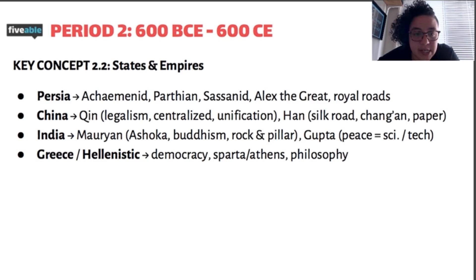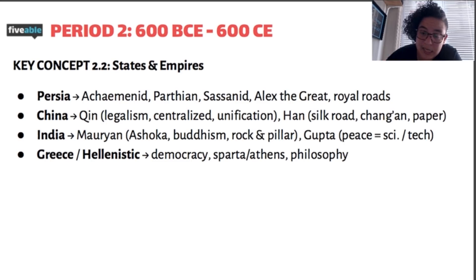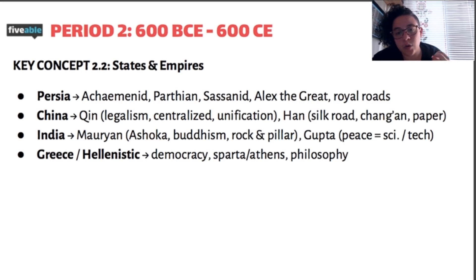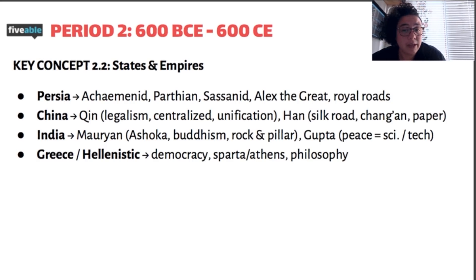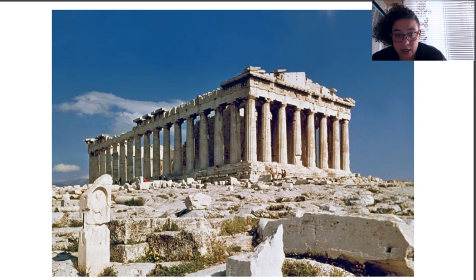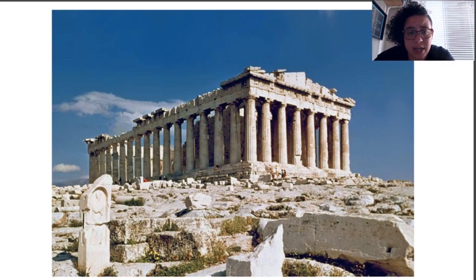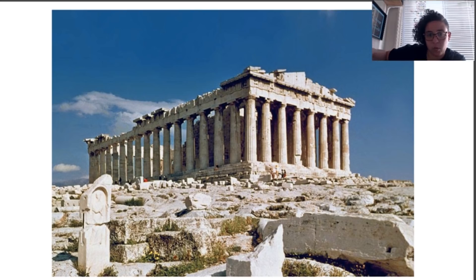Moving over to Greece and Hellenistic society — whenever you see the word Hellenistic, that's referring directly to Greek things. Key ideas include democracy, although it wasn't the same type of democracy we know today. The philosophers and their philosophies are incredibly important. You can see what Greek architecture looked like with the columns — very specific — and when you see that style anywhere else in the world, that represents the spread of Hellenistic ideas and Hellenistic architecture.